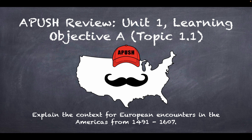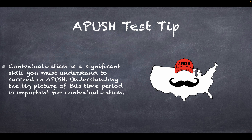The very first one we're going to do today is Unit 1, Learning Objective A, Topic 1.1. The objective is to explain the context for European encounters in the Americas from 1491 to 1607. That's what you'll be able to do by the end of this video. Every video will also have an assessment that matches up to the objective.